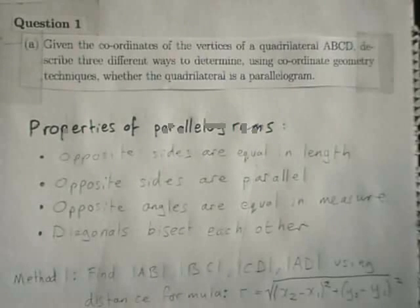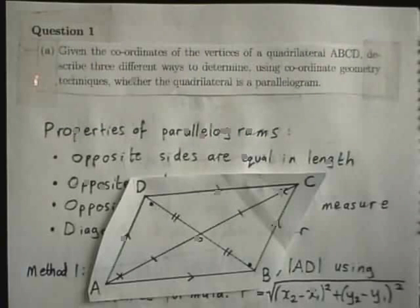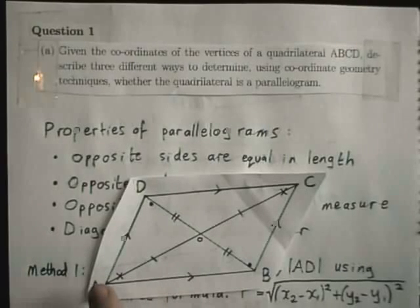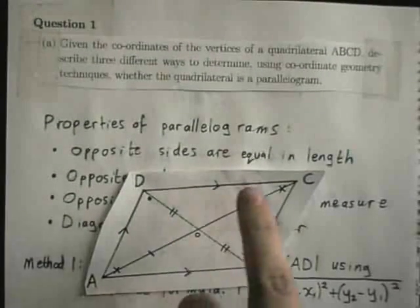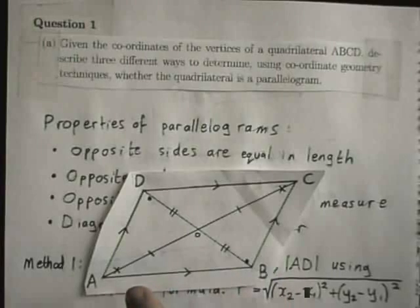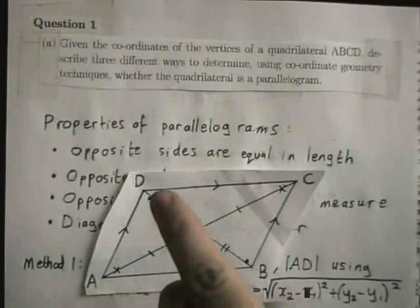The hints for this question are the properties of parallelograms. The first property of parallelograms is that opposite sides are equal in length. So what I mean is that length AB is equal to length DC, and length BC is equal to length AD.